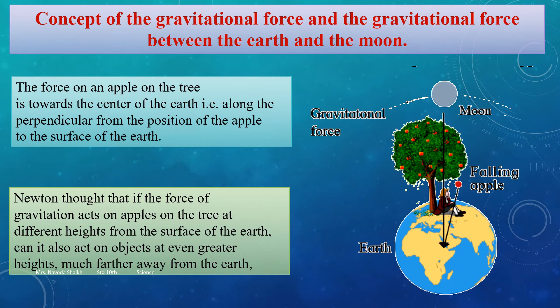Newton thought that even the moon, which is moving around the earth, is also only moving around the earth. It is not going away and it doesn't travel to any other part of the solar system. It stays in its particular orbit that it is revolving in, and that is because of the gravitational force acting on the moon.